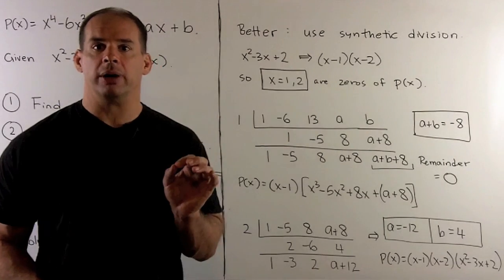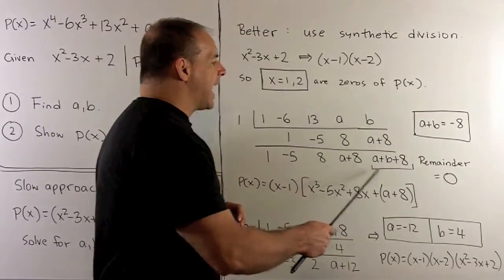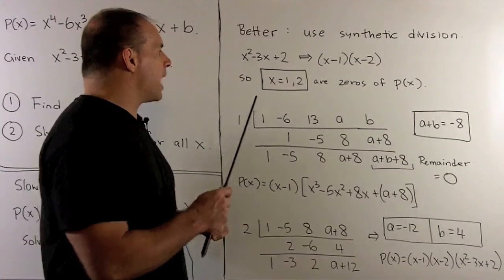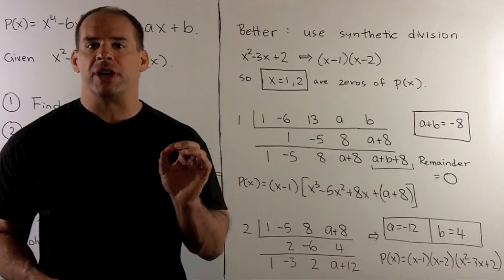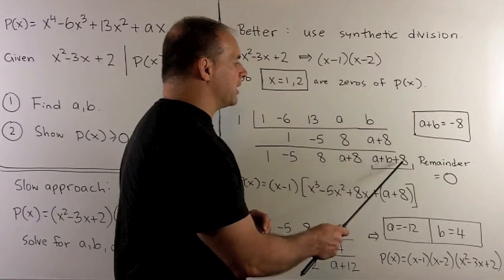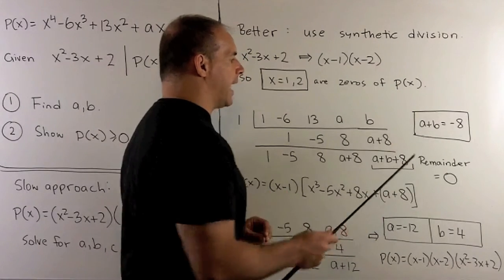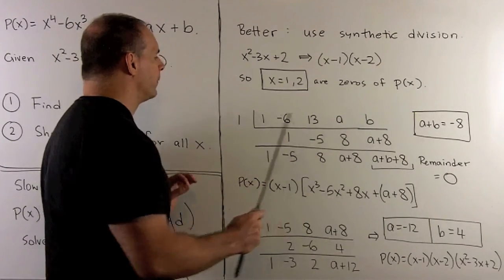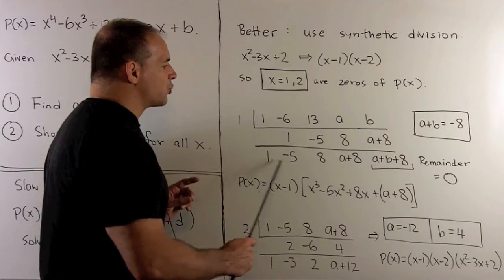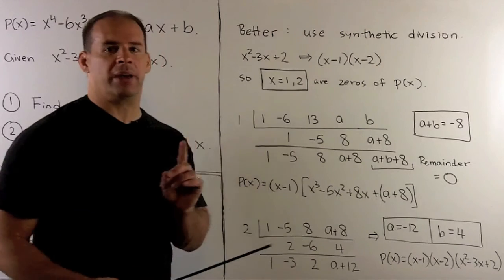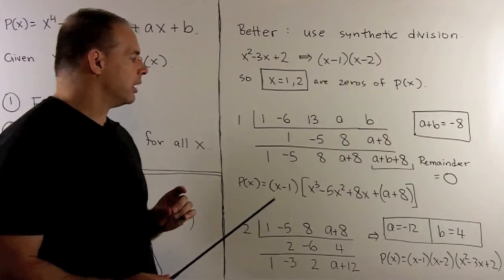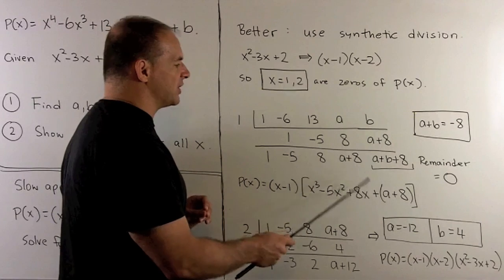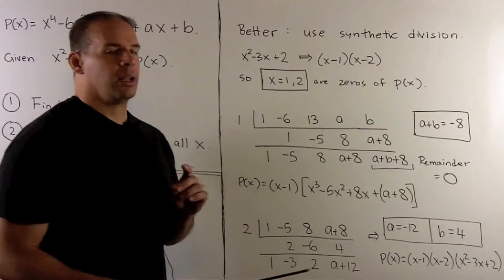Now what we need to do is to interpret. First thing to note, the very last item here is going to be the remainder if we were to long divide. So because we have X minus 1 dividing P of X, the remainder is going to have to be equal to 0. So that's going to give me A plus B plus 8 is equal to 0, or A plus B is equal to minus 8. We also have P of X here. I'll have X minus 1 here. And then this last row is going to tell us the coefficients for the cubic that we multiply X minus 1 by to get P of X. So we'll have X cubed minus 5X squared plus 8X, and then the constant term is going to be A plus 8.